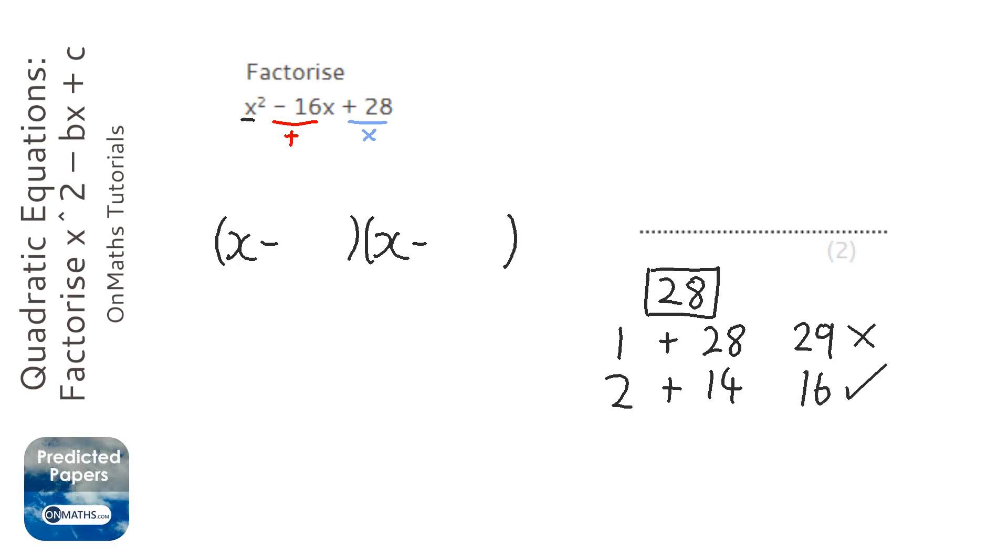Now we obviously know that they're minus 2 and minus 14. So it's minus 2 and minus 14. Now a common question is, does it matter which way around it is? Well, if you think about it, 2 times 3 is 6, 3 times 2 is 6. They're both equal, the same number.